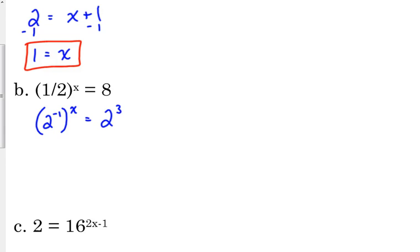So when we raise a power to another power, we multiply. So that's 2 to the negative x. Negative 1 times x is negative x on the left side, and 2 cubed on the right side. So that says negative x is equal to 3. So positive x is equal to negative 3.